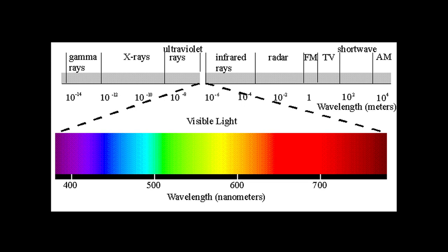Photosensitive cells in the retina can detect the visible light region of the spectrum, ranging from short wavelengths starting at about 390 nanometers to longer wavelengths ending at about 750 nanometers.